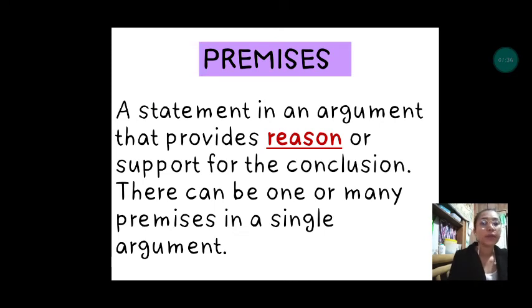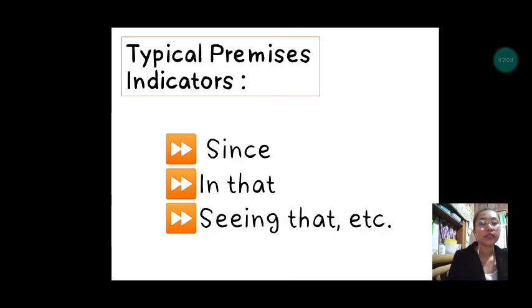Premises: a premise is a statement in an argument that provides reason or support for the conclusion. There can be one or many premises in a single argument. Like I mentioned earlier, in an argument we can have many reasons to support our conclusion. This will serve as evidence to come up with one conclusion.